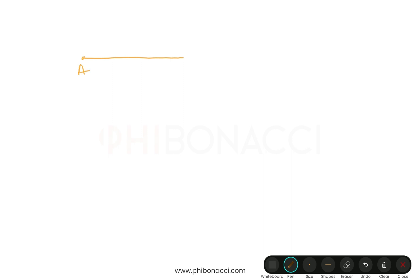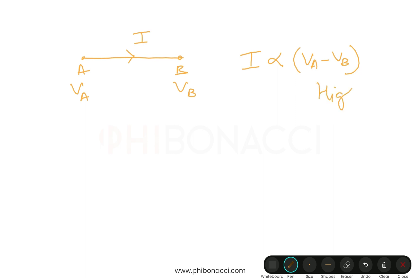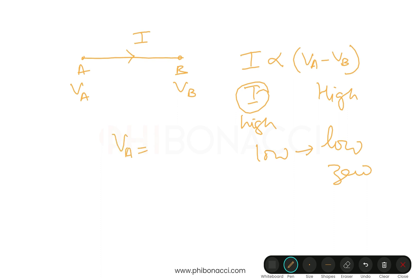Let us understand it better with a part of a circuit — a wire with ends A and B. Our conductor is AB and let us assume current I is flowing through it. The potential at A is VA and at B is VB. The current flowing through the wire will directly depend on the potential difference between VA and VB. If the potential difference is high, the current is high; if low, the current is low; and if VA equals VB, no current flows.